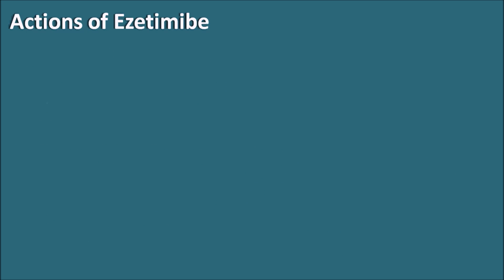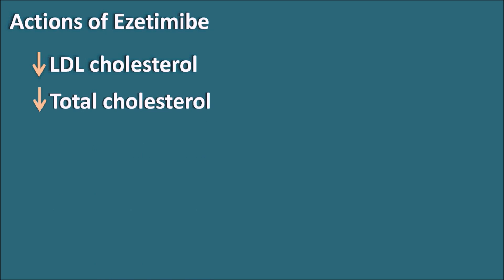Now let us see the actions of Ezetimibe. Ezetimibe decreases LDL cholesterol, which is called the bad cholesterol, and LDL cholesterol is mainly responsible for the generation of atherosclerosis. It also decreases total cholesterol. As Ezetimibe is not specifically acting on any lipoproteins but inhibits the absorption of cholesterol, it can decrease cholesterol levels in many lipoproteins, because cholesterol is present in LDL as well as in small amounts in VLDL. So the total cholesterol in the body is decreased by Ezetimibe.